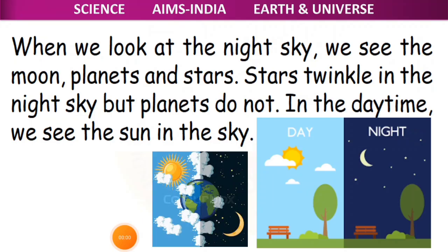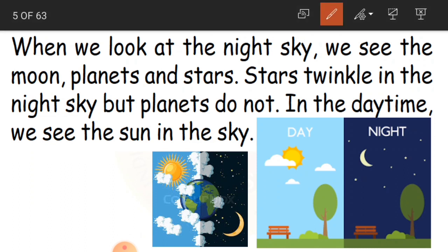This is our checklist. You have got some pictures reflecting day and night. When we look at the night sky, we see the moon, planets, and stars. Stars twinkle in the night sky, but planets do not. In the daytime, we see the sun in the sky. However, we will not be able to see the planets with the naked eye — they are there, but we cannot see them without special instruments.